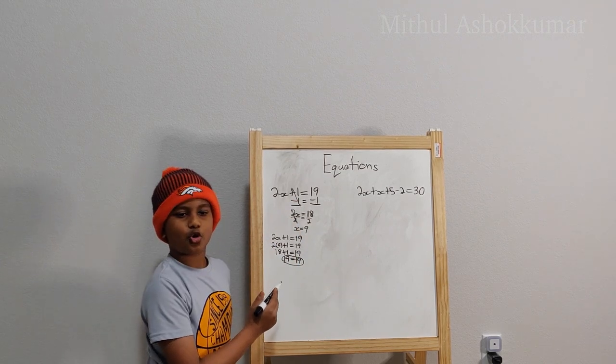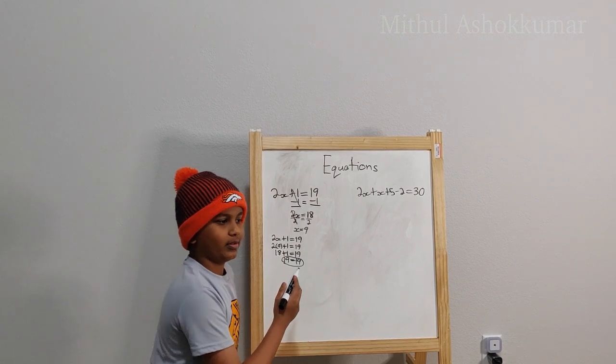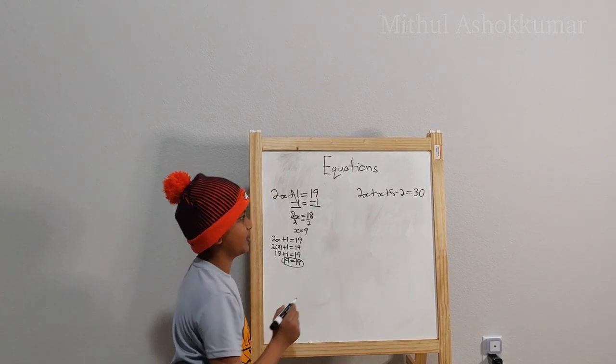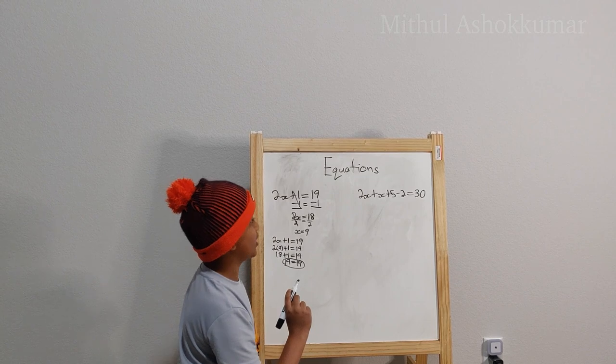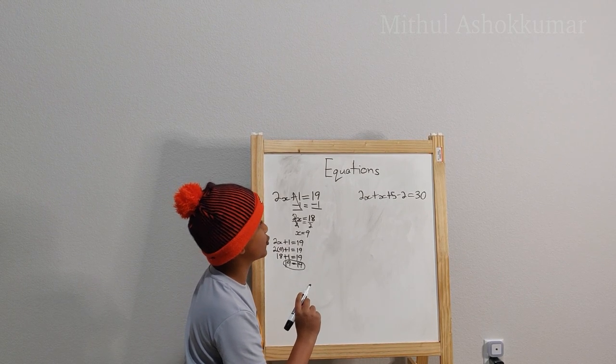Now that you solved a basic equation, let's get into something more complex. 2x plus x plus 5 minus 2 equals 30.